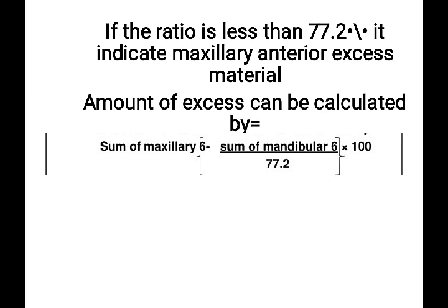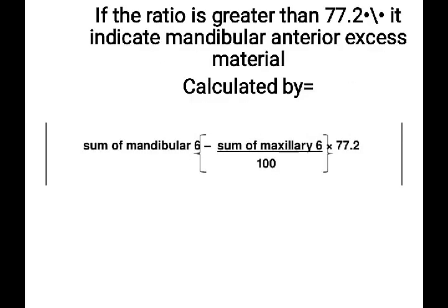For the anterior ratio: if it is less than 77.2%, it indicates maxillary anterior tooth material is in excess. To calculate the maxillary anterior excess, the formula is: sum of maxillary 6 minus (sum of mandibular 6 multiplied by 100, divided by 77.2%). Whatever value is obtained is the maxillary excess.